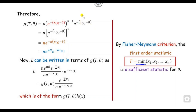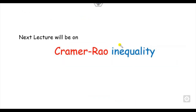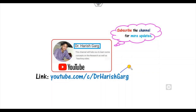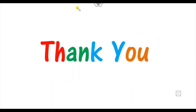This is the simple three-step rule by which you can find any sufficient statistic using the Fisher-Newman criteria. Make sure to verify first that the factorization theorem is not applicable. In our next class, we will discuss the Cramér-Rao inequality for estimators. Till then, follow the link for more updated videos. Best of luck, students!